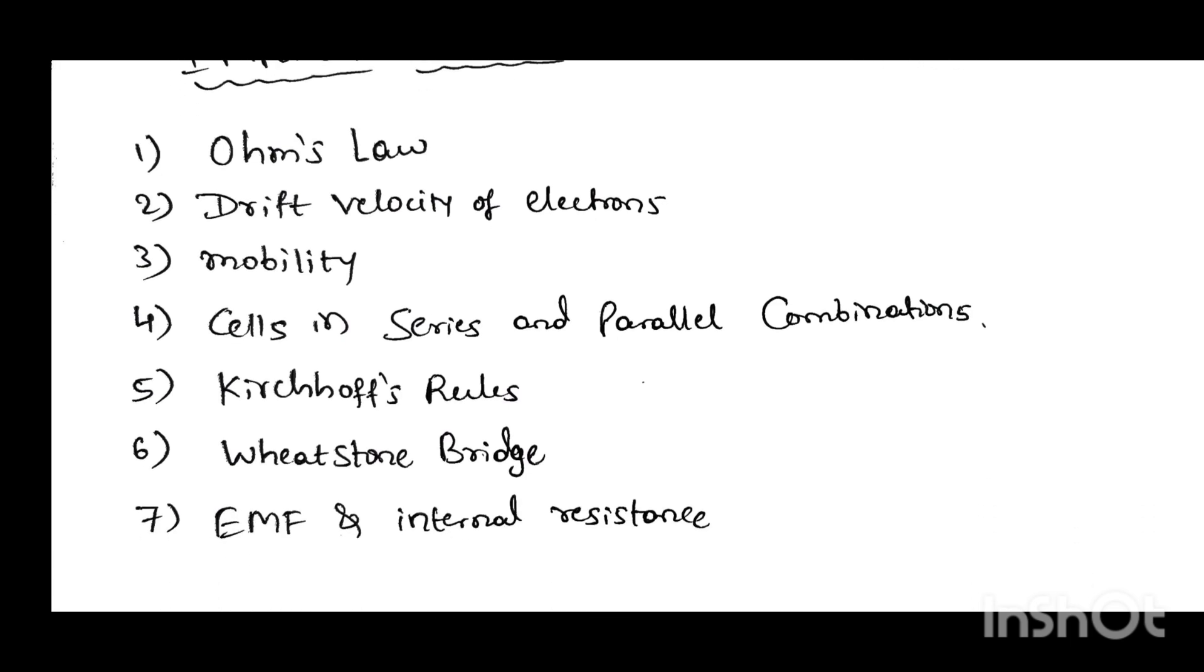Next one is Kirchhoff's rules. Here, there are two rules. Next, important concept, Wheatstone Bridge. From this concept, you are going to get 5 mark derivation. You have to draw the diagram and mention the arrow marks in diagram and obtain the expressions and balance that condition. Next one is EMF and internal resistance. These are the main concepts in this chapter.